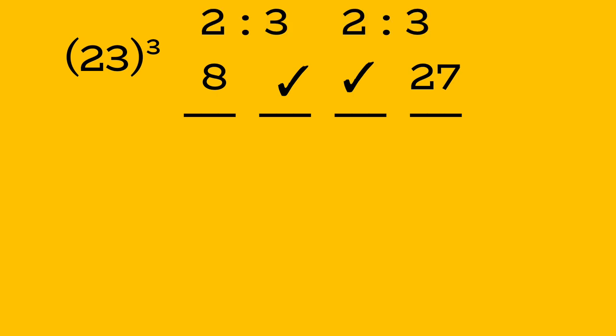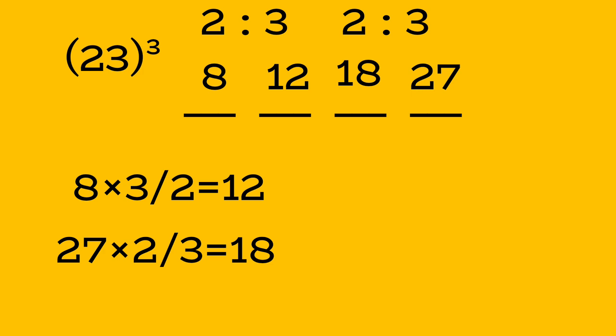Let us take another question: 23 cube. Step 1: creating 4 places like this. Step 2: write 2 cubed as 8 at 1st place, and 3 cubed at 4th place as 27. Step 3: filling 2nd and 3rd place in the ratio 2 is to 3, which is 12 and 18. Write it at the 2 places accordingly.